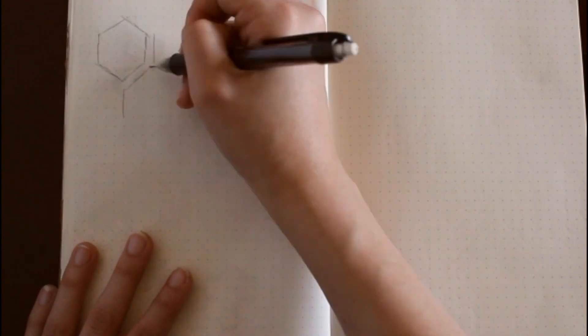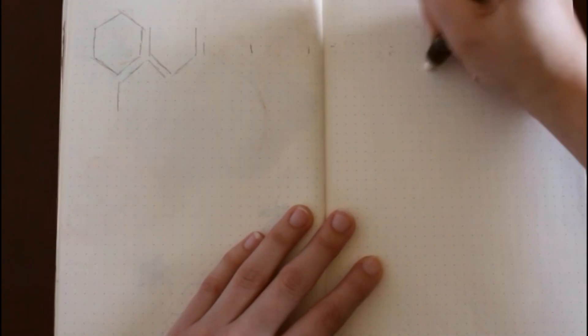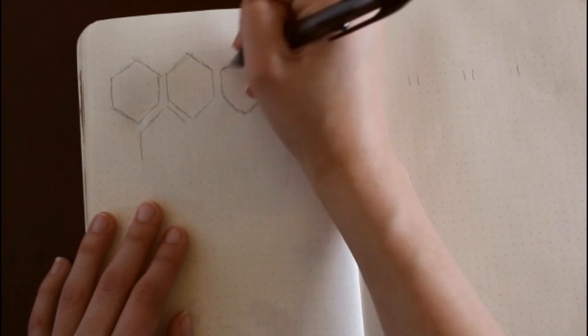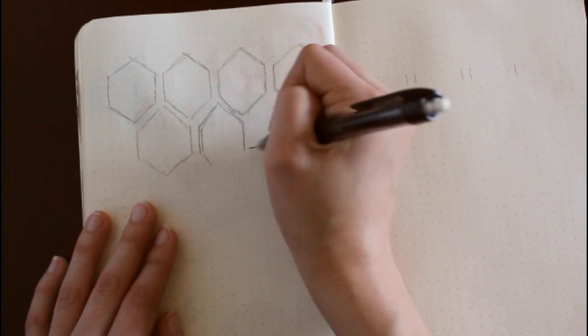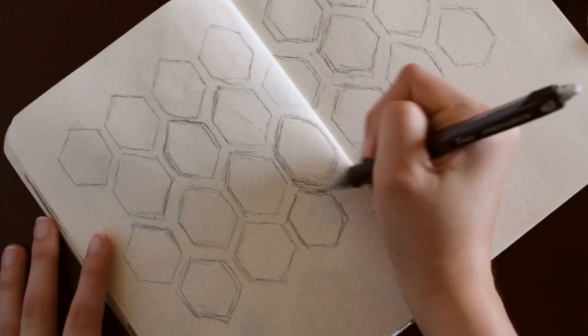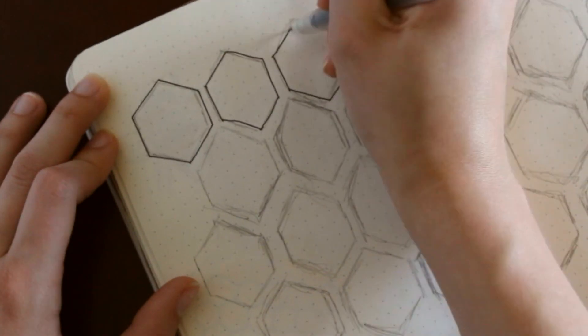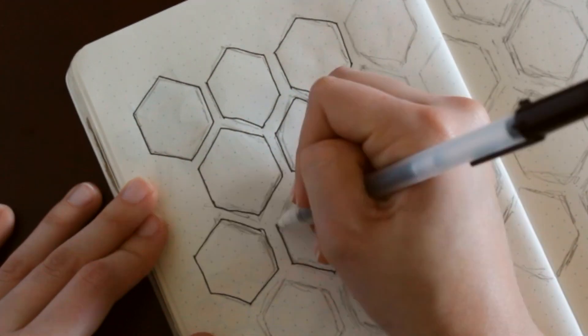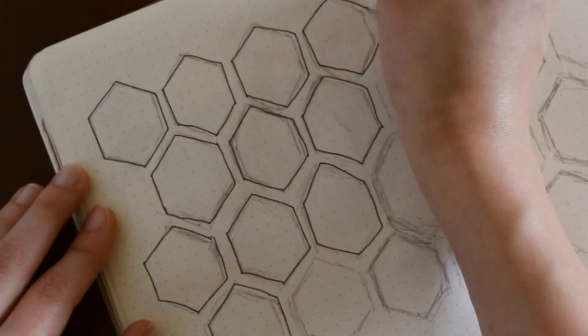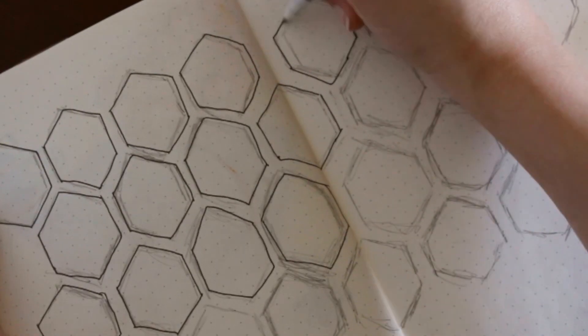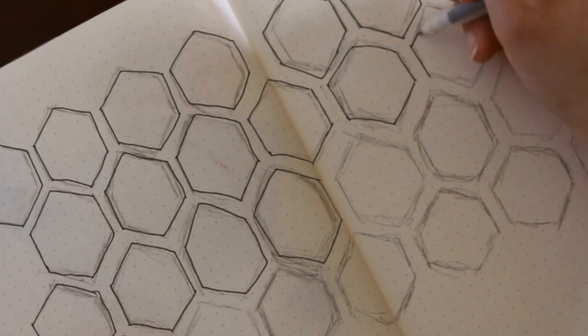Moving on to the month at a glance, I'm just drawing a bunch of honeycombs. I free-handed it, you're more than welcome to use a ruler, it probably would have made it more even if you used a ruler. I start my weeks on Mondays, so my calendar may look different than a generic calendar, just keep that in mind when following along.